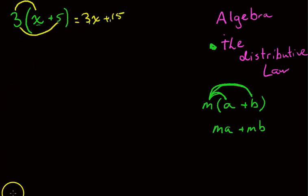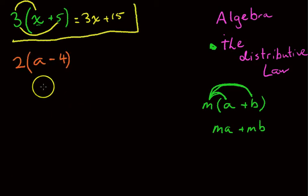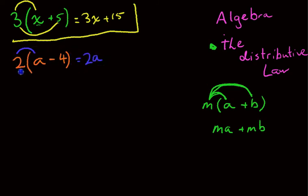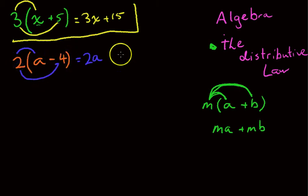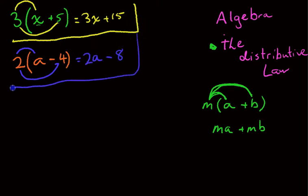Let's run through a quick example so you can see it in action. We've got 2 times the bracket a minus 4. We've got 2 times a, which will make 2a, and we've got 2 times negative 4. Be careful here — it's 2 times negative 4, which will make negative 8.